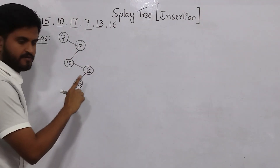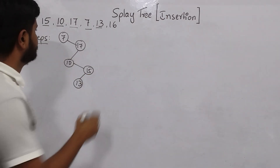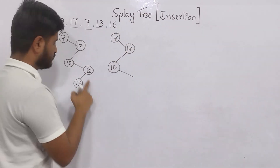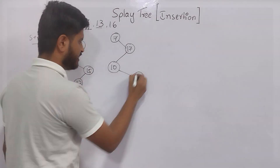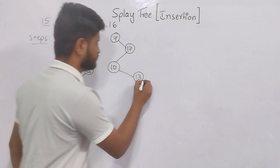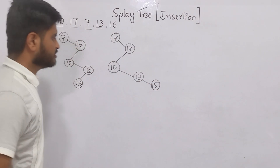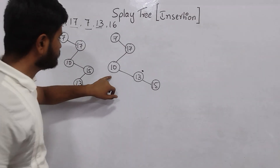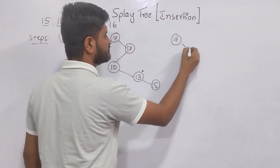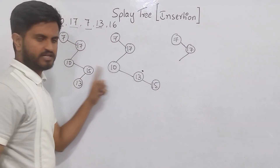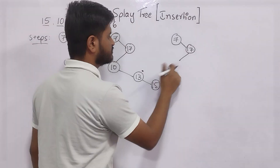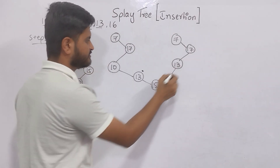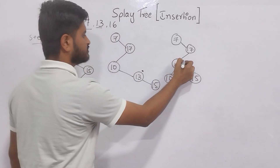Level by level: first I swap 15 and 13. 7, 17, and 10 stay the same. 15 is replaced by 13, and 15 is greater than 13, so I write 15 to the right. My inserted node 13 is still not the root. I swap 13 with 10: 7 and 17 stay the same. 13 comes here; 10 is less than 13 so it goes left, 15 is greater than 13 so it goes right. Now 13 is here and I move it one more level up.